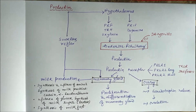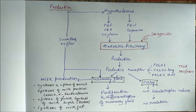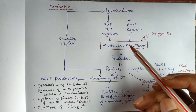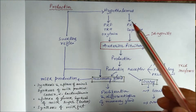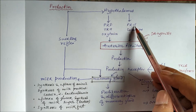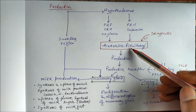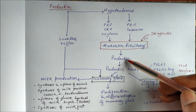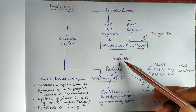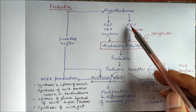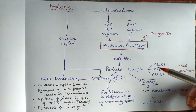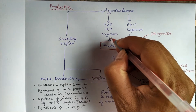Namaskar. Today we will study prolactin, which is one of the anterior pituitary hormones. The release of prolactin is regulated by hypothalamic factors: prolactin releasing factor (PRF) and prolactin release inhibiting factor (PRIF). These two act on the anterior pituitary to either increase or decrease the release of prolactin. Hypothalamus releases PRF to stimulate prolactin, and PRIF to inhibit prolactin release from the anterior pituitary.